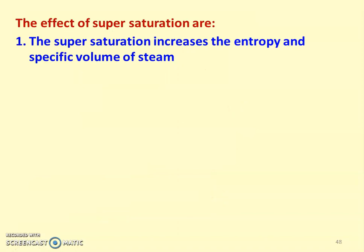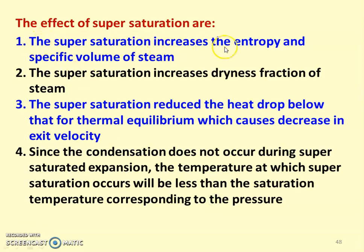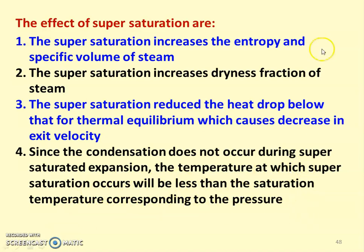The effects of supersaturation: supersaturation increases the entropy and specific volume of the steam, because the condensation process is delayed. Supersaturation also increases the dryness fraction of the steam. Supersaturation reduces the heat drop below that of thermal equilibrium, which causes a decrease in exit velocity. Since condensation does not occur during supersaturated expansion, the temperature at which supersaturation occurs will be less than the saturation temperature corresponding to that pressure. In summary: entropy and specific volume increase, dryness fraction increases, but enthalpy drop and exit velocity decrease.